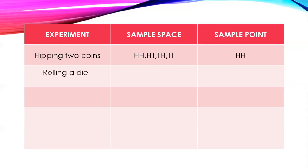Rolling a die: sample space is 1, 2, 3, 4, 5, 6. Sample point could be 5.